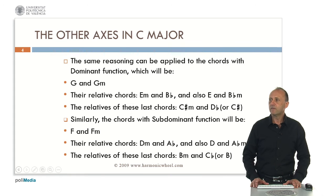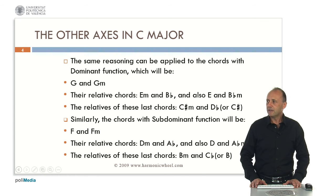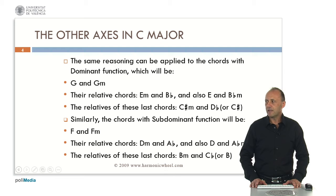We can repeat the process for the dominant and subdominant chords. If we start with the dominant chord G major, we look for parallel and relative chords and we find G minor, then the relative chords E minor and B flat major, the parallel of these chords — E major and B flat minor — and the relatives of these last chords: C sharp minor and D flat major or C sharp major.